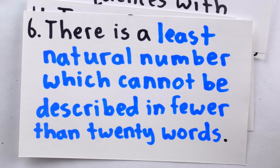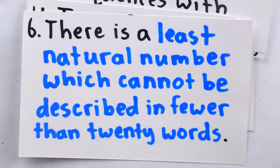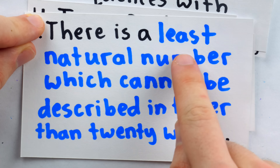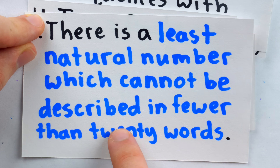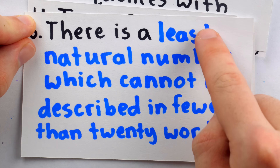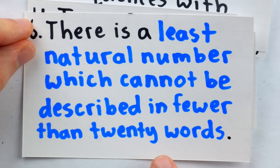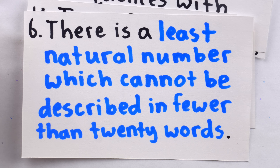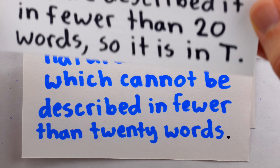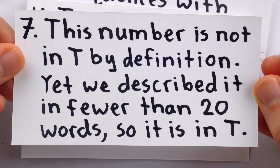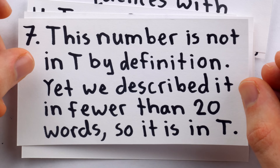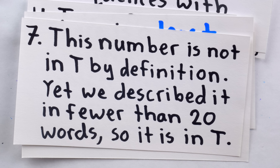Ah, but that is where the trouble begins, because if we count the number of words in the description 'the least natural number which cannot be described in fewer than 20 words,' we get 12 words. This least natural number, which cannot be described in fewer than 20 words, we have literally just described in fewer than 20 words. So the number isn't in T by definition, yet since we just described it in fewer than 20 words, it is in T.